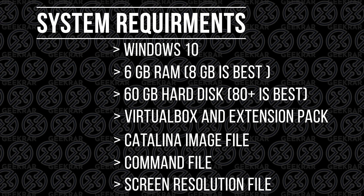We're going to need a PC with at least 6 gigs of RAM — 8 is going to be best. For hard drive space we need at least 60 gigs of free space, but 80 is going to do you better. We're going to need to download VirtualBox and the extension pack, the macOS Catalina file, the command file, and the screen resolution file.